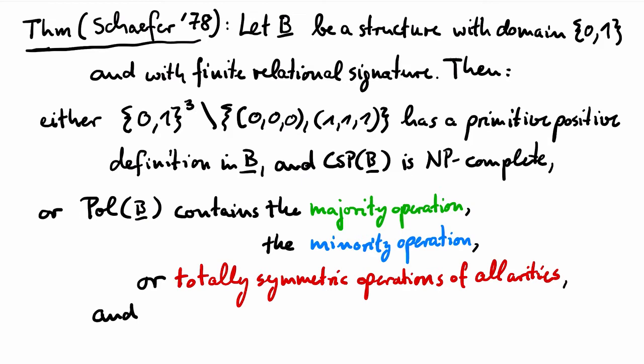In the case that B has a majority polymorphism, it is not difficult to adapt the path consistency procedure that we have already introduced for directed graphs, and to prove that path consistency solves CSP(B). This captures in particular the 2-SAT problem that we have seen.